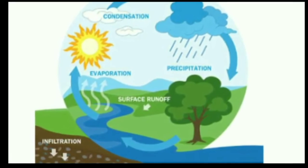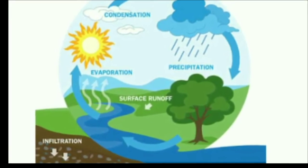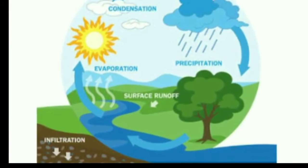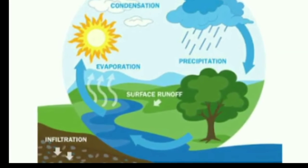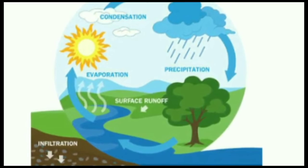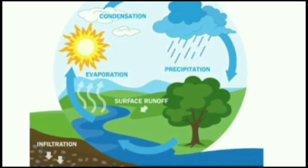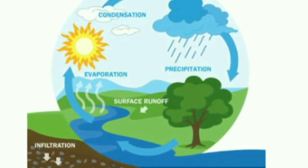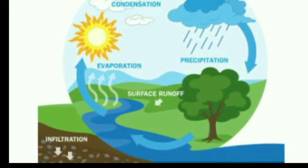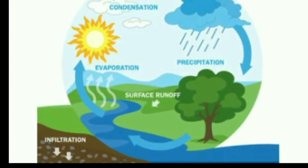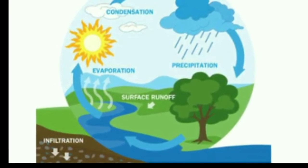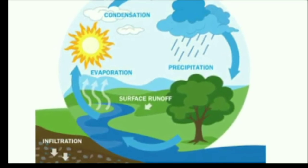Let us now learn about the water cycle. All the water on the earth is regulated through the water cycle. The sun's heat evaporates water from the oceans. This water vapor condenses after reaching the sky and falls back on the earth in the form of rain. Rain water creates fresh water sources on the earth.